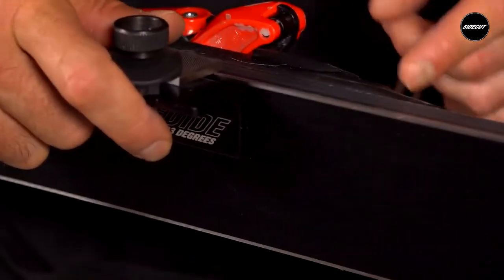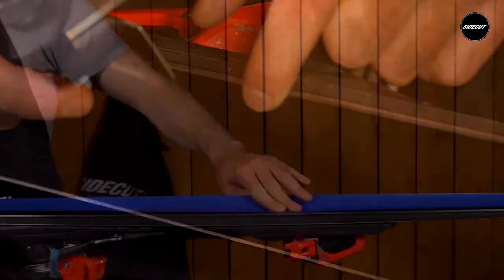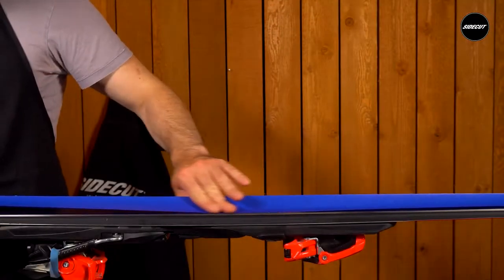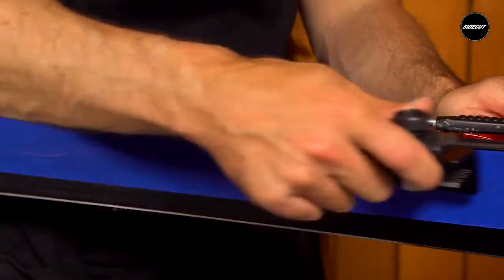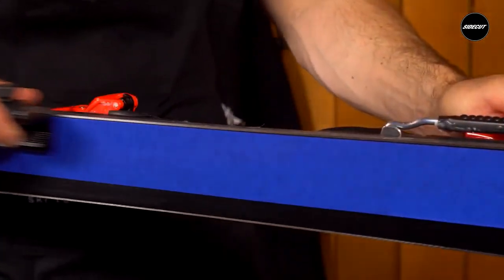Or even worse, deeply mark your base as you slide your guide along. A great way to protect your base is to apply a strip of painter's tape directly on the base close to the edge and down its full length.